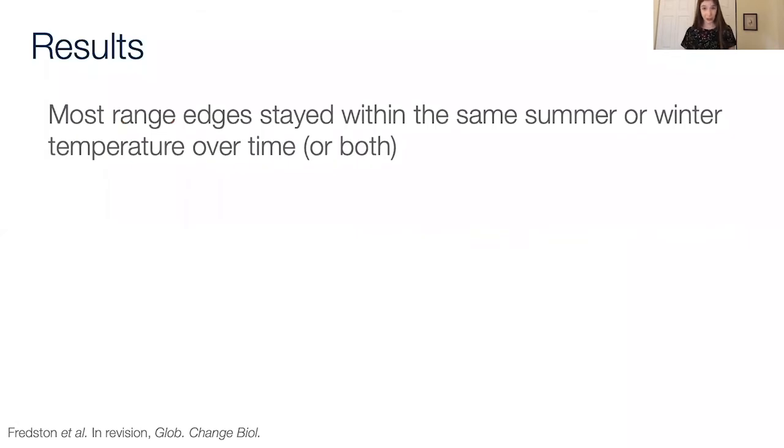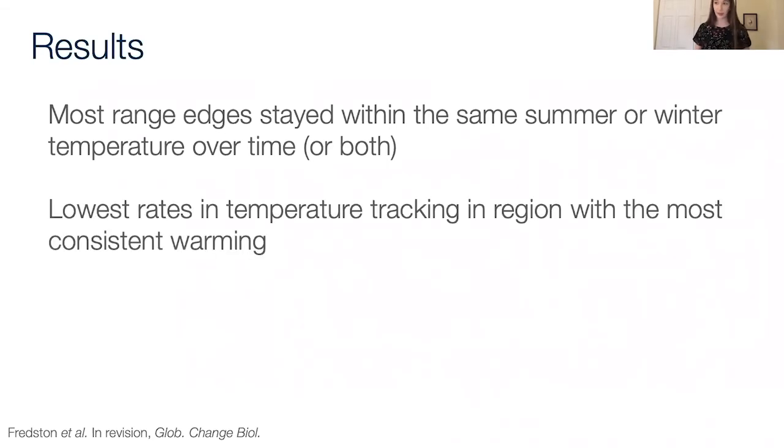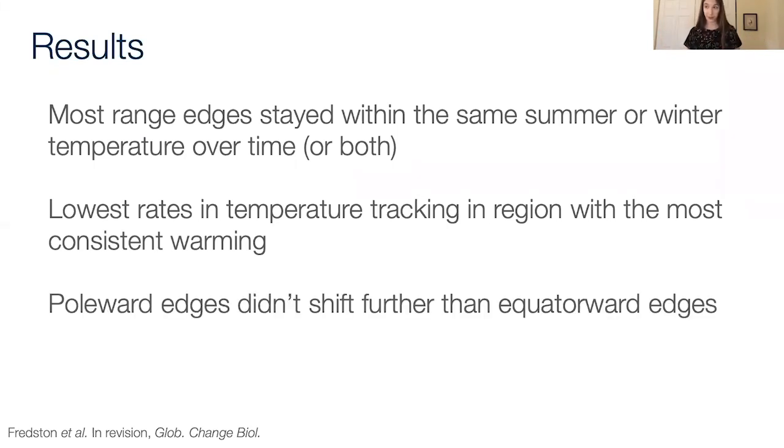When we looked at their temperature tracking, we actually found that most range edges stayed within either the same summer or winter temperature or both. This first point might make you think, okay, great, range edges in the oceans are really well explained by temperature. However, the place where temperature explained them worst was the place that's had the most warming, which is the Northeast. Which suggests that maybe it's not the case that these edges are tracking temperature perfectly so much as we can't reject that null hypothesis until there's conclusive evidence during a warming period that they aren't. And we also found that poleward edges didn't shift further than equatorward edges.